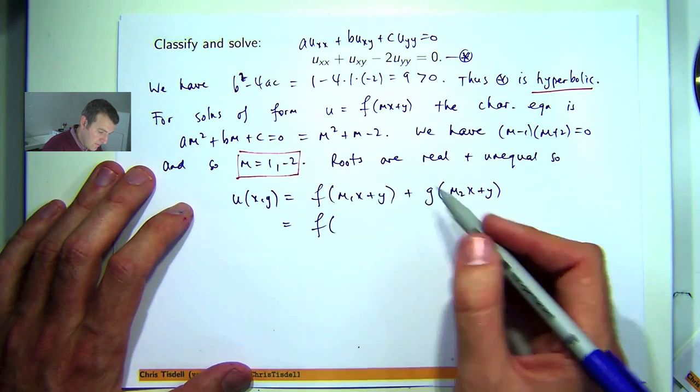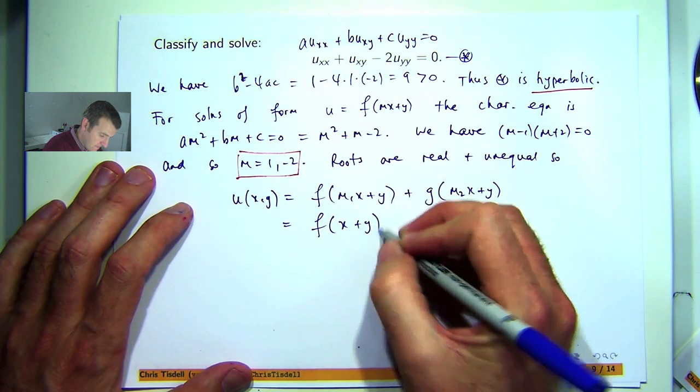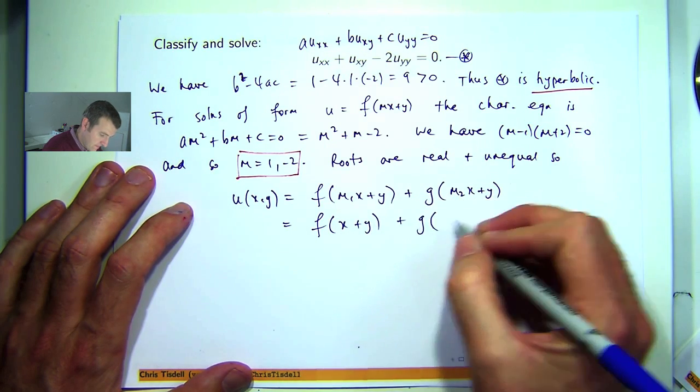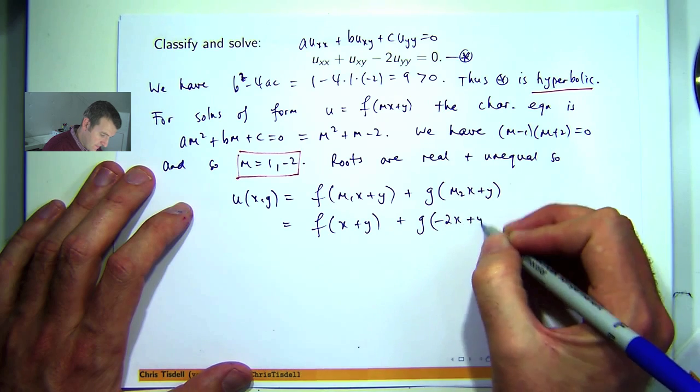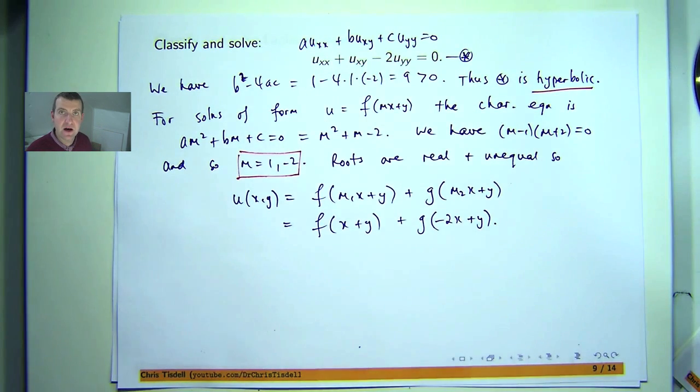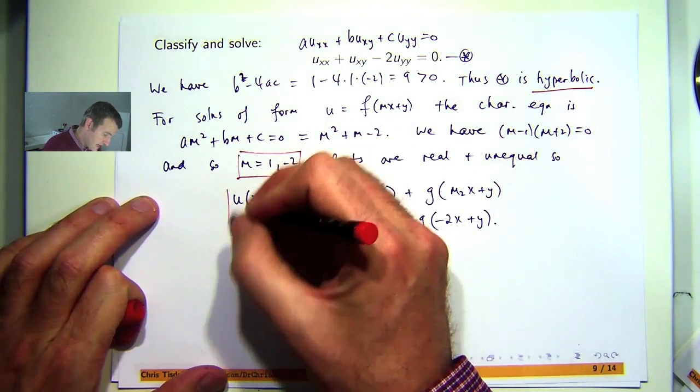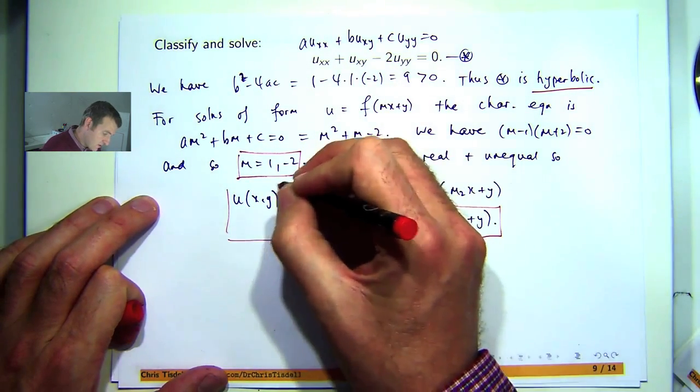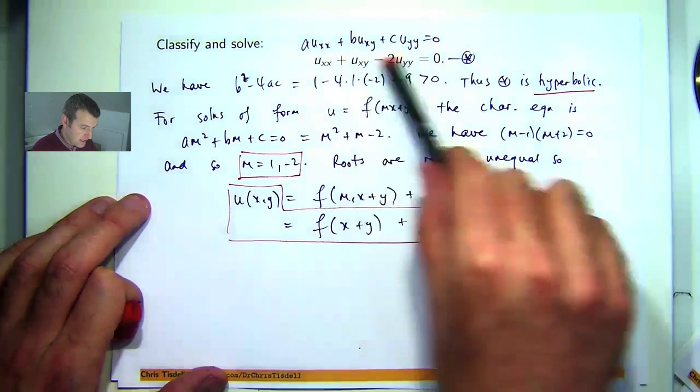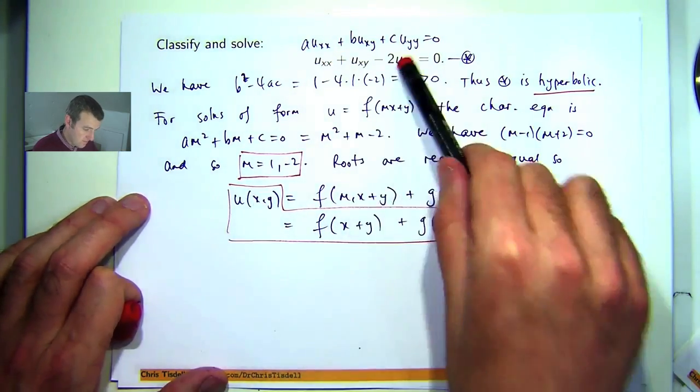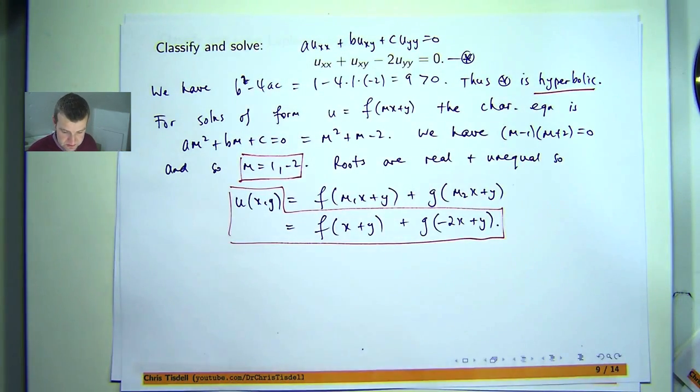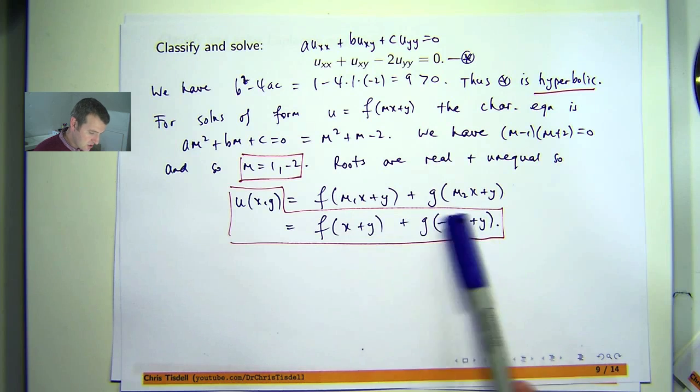So our roots are real and unequal. Therefore, our solution will be of this form, as you would expect, with hyperbolic PDE. So it doesn't matter where you put the M1 and the M2. And there we have our general solution. So you can test to see whether you're right or not, of course. You can take this and calculate all the partial derivatives and plug it in there and see if the equation holds.